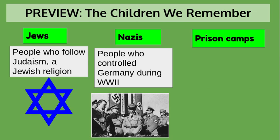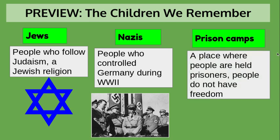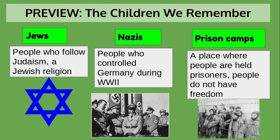Prison camps are where people are held prisoners and they don't have any freedom. They don't have any basic rights. They can't go to work and get paid, and they can't go see their families most of the time. This is a photograph of children in World War II in a prison camp. These are Jewish children.